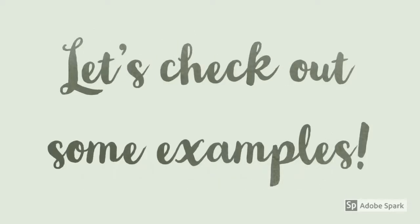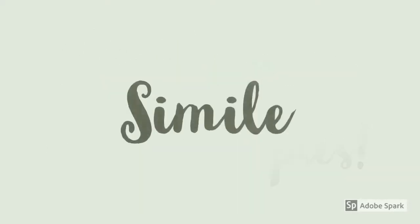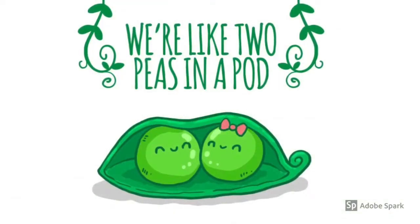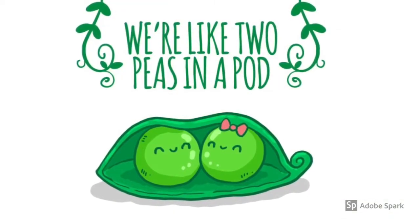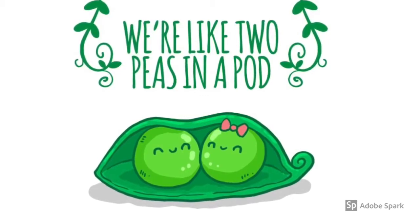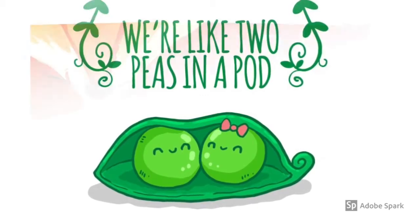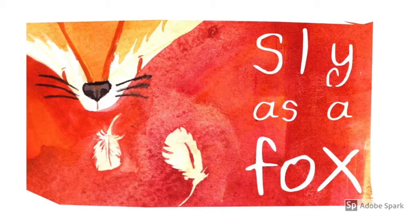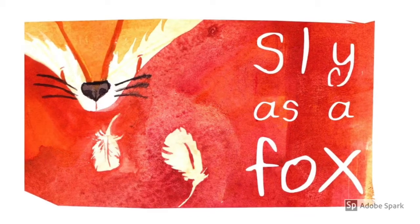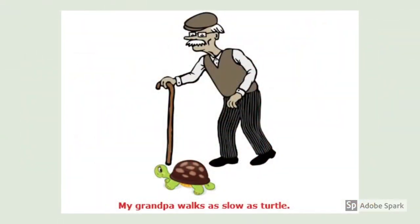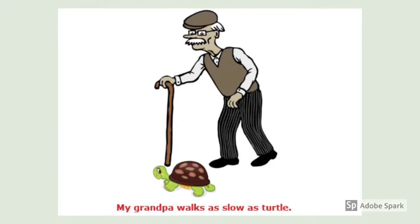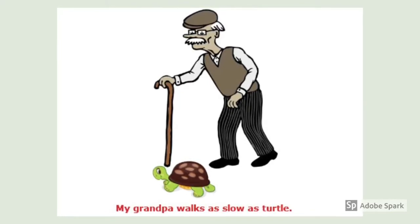Now let's check out some examples. First up is a simile. A simile is any comparison with the words like or as. We're like two peas in a pod is just one example of a simile. Sly as a fox is another example of a simile. And my grandpa walks as slow as a turtle is yet another example of a simile.